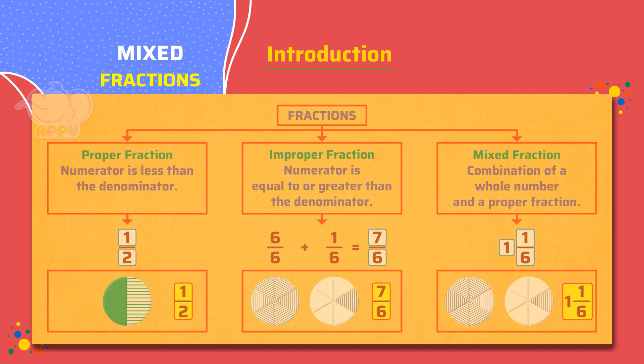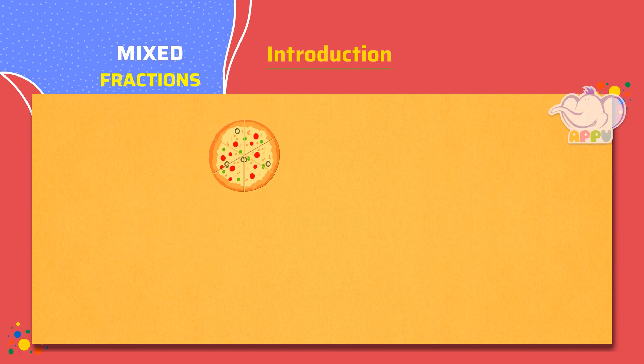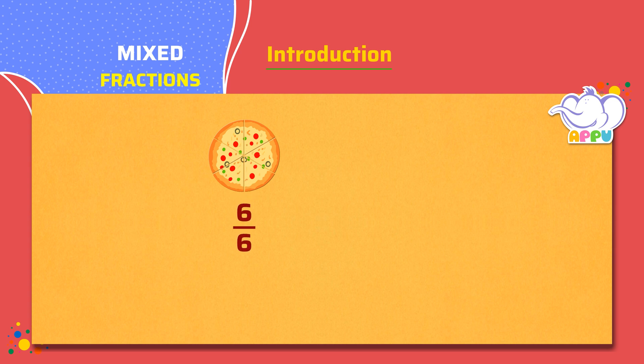Let's look at an example with the pizza. Two friends order a pizza and finish all 6 slices. Then, they order one more pizza and finish 2 more slices.